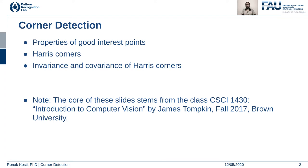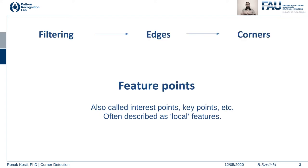We started with filtering and moved on to edges, and corners are a natural flow to our low-to-high level computer vision tasks. Corners are more distinctive features than edges because edges tend to change in one direction and remain constant in the other, whereas corners have fewer degrees of freedom and therefore bring out a more distinctive property.